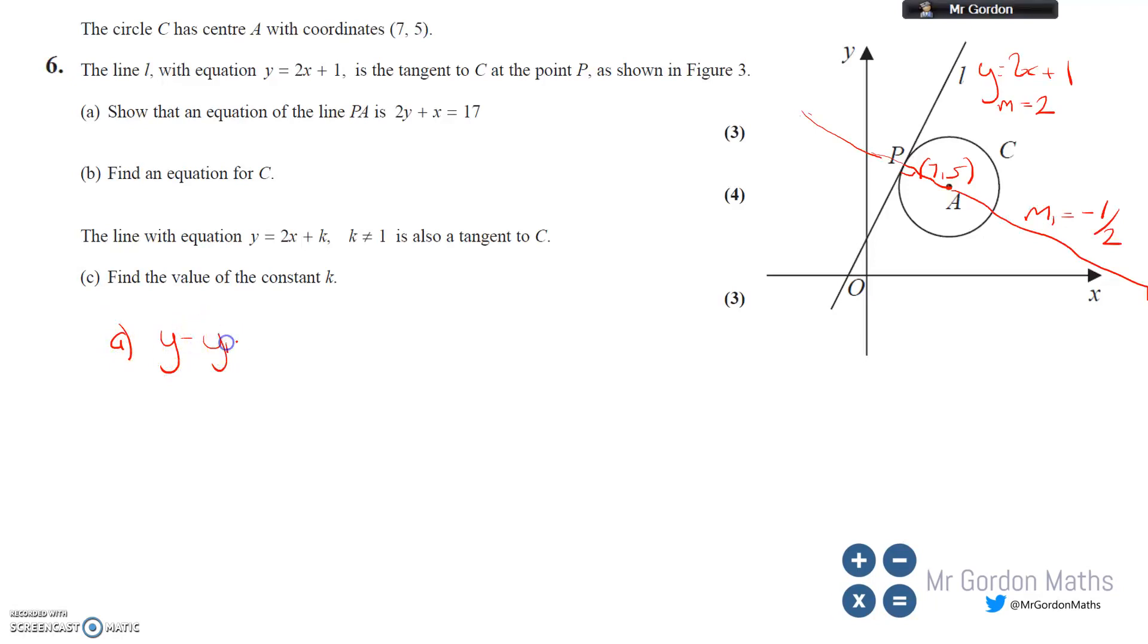Let's start part A. I'm going to use the formula y-y1=m(x-x1). Pop in your coordinates: y-5, that's our center coordinate of 5, equals minus a half times (x-7). Then we rearrange to get the result.